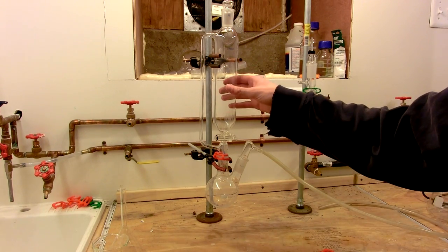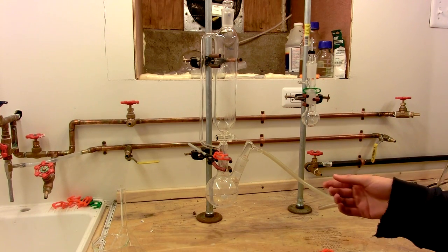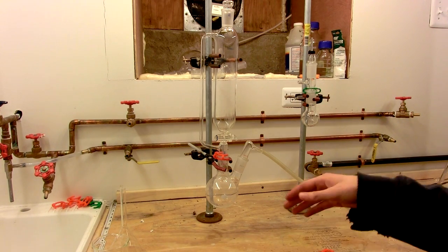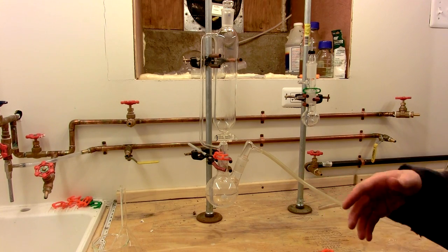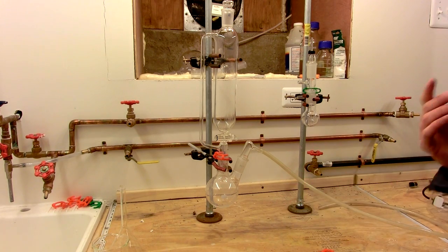Typically, chlorine is generated by the addition of hydrochloric acid to either manganese dioxide, TCCA or trichloroisocyanuric acid, or some other hypochlorite like calcium hypochlorite.